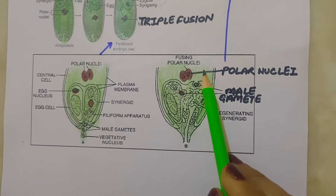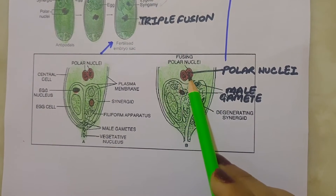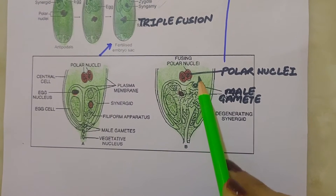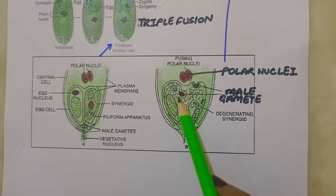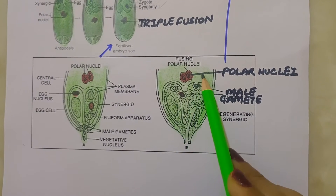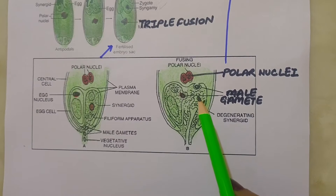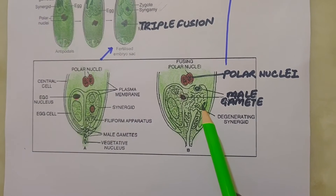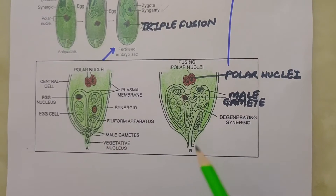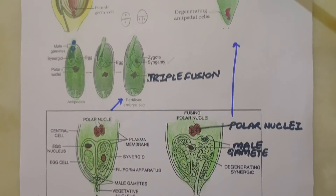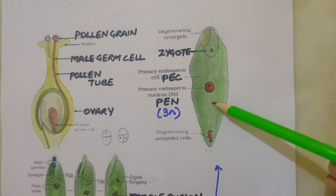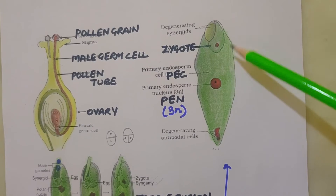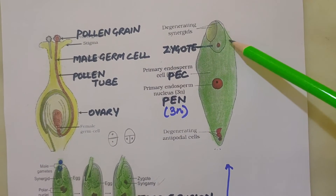As this involves the fusion of three haploid nuclei — two polar nuclei plus one male gamete — it is termed as triple fusion. Since two types of fusions, syngamy and triple fusion, take place in an embryo sac, the phenomenon is termed as double fertilization, an event unique to flowering plants. The central cell after triple fusion becomes the primary endosperm cell and develops into endosperm, while the zygote develops into embryo.